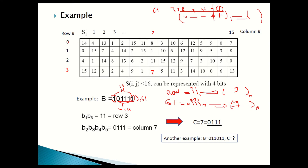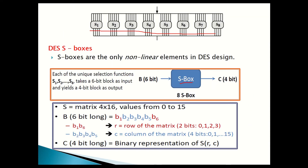Row 0 starts here, then row 1, 2, 3. So row 3 is the last row. The column starts from 0 up to 15. So this is column 7. The intersection between row 3 and column 7 is 7. So the value is converted to 7, which in binary is 0, 1, 1, 1 — 4 bits. I converted 6 bits to 4 bits. This is the main goal of the S-box.